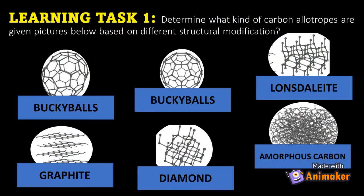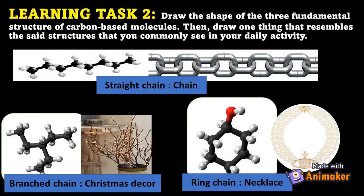Learning Task Number One: Determine what kind of carbon allotropes are shown in the given pictures, based on their different structural modifications. Learning Task Number Two: Draw the shape of the three fundamental structures of carbon-based molecules, then draw one thing that resembles each structure that you commonly see in your daily life. Answers: straight chain — a chain; branch chain — a Christmas decoration; ring chain — a necklace.